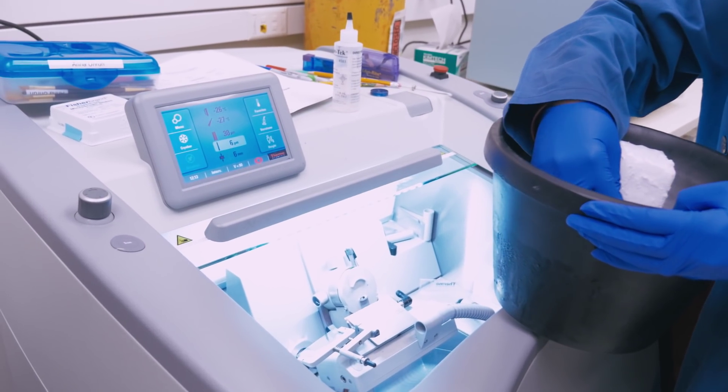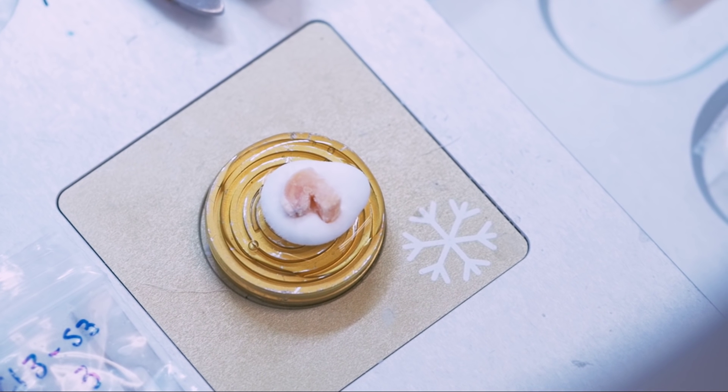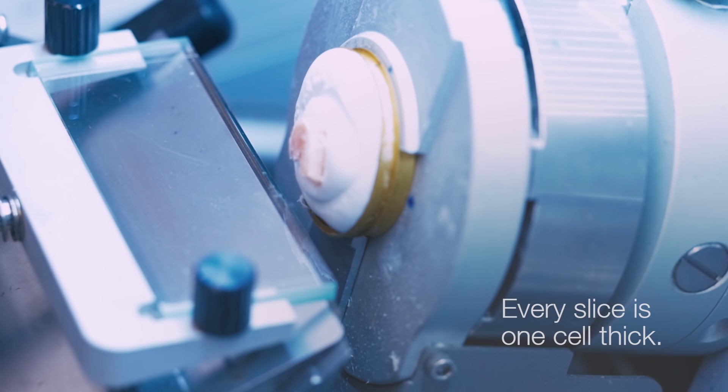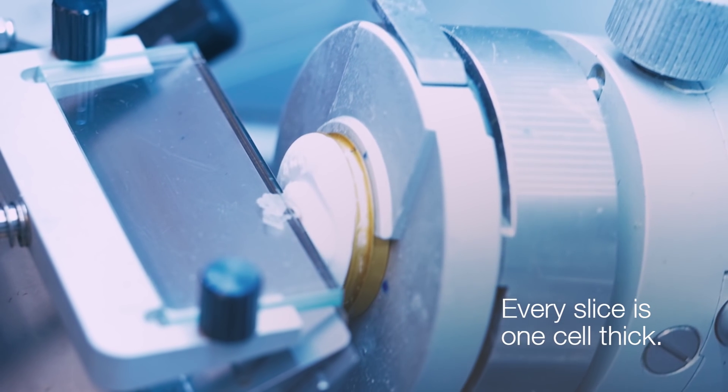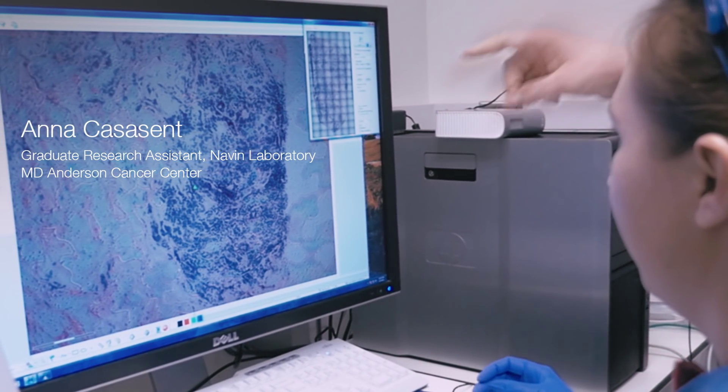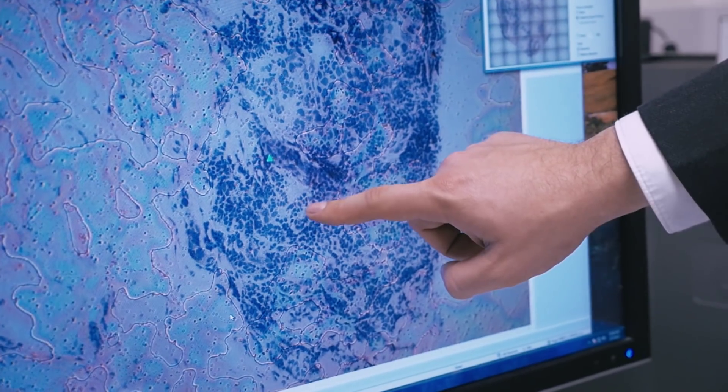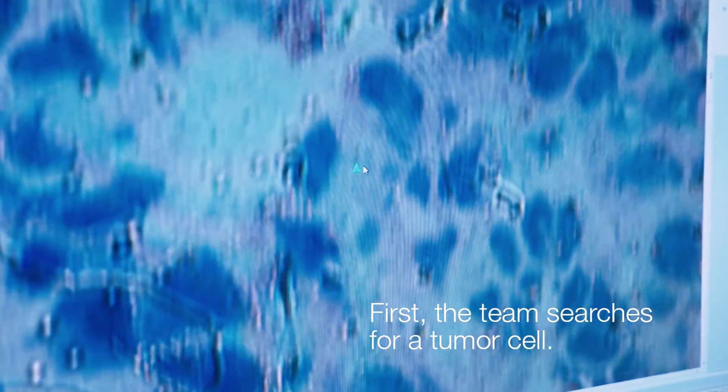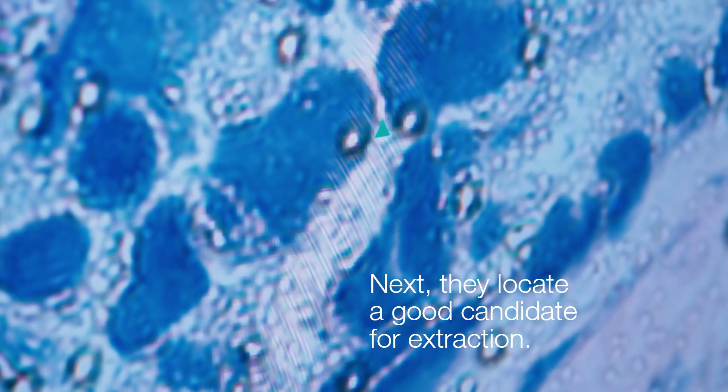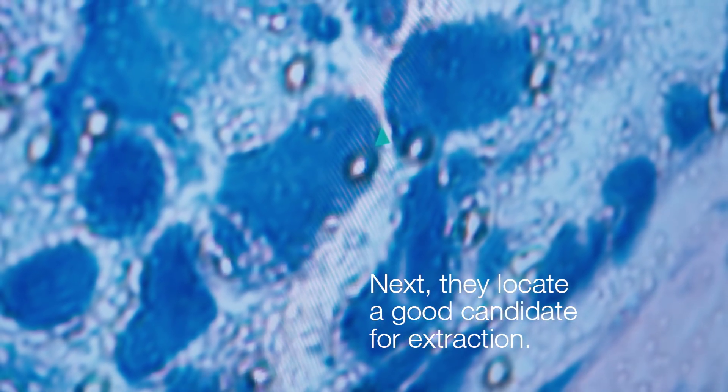So this is our cryomicrotome system, which allows us to keep the tissue frozen while Anna goes through and cuts it with a very fine blade that will cut sections that are only one cell thick throughout the tissue. We're going to be looking at an early stage breast cancer called ductal carcinoma in situ. We'll see ducts at the earliest stages of tumor development where the tumor cells have started to proliferate within the ducts.